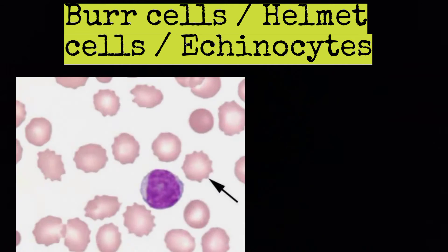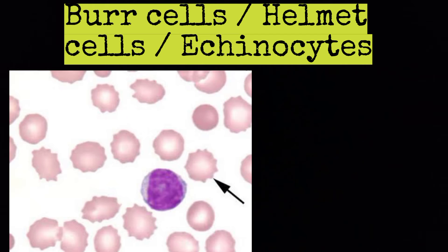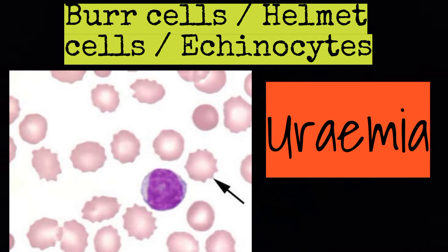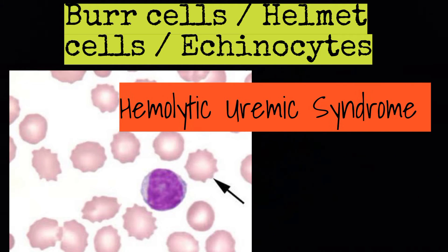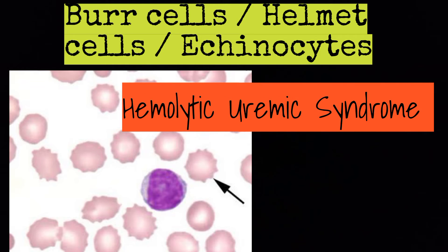Burr cells, also known as helmet cells or echinocytes, are present in uremia or HUS, that is hemolytic uremic syndrome.